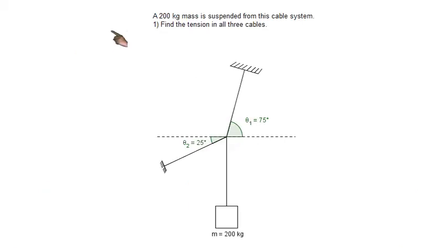A 200 kilogram mass is suspended from this cable system, shown in this diagram. First problem is find the tension in all three cables. So we have a mass suspended from two cables. One is planted up here in the ceiling, and one is planted down here lower. This first cable is angled 75 degrees up from the horizontal, and the second cable is angled 25 degrees down from the horizontal on the left.